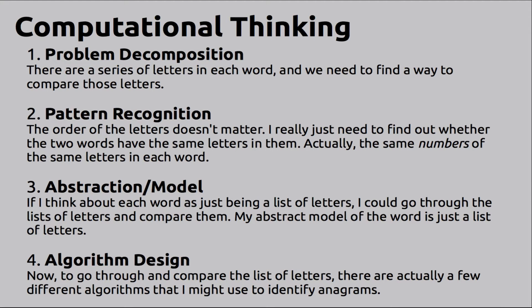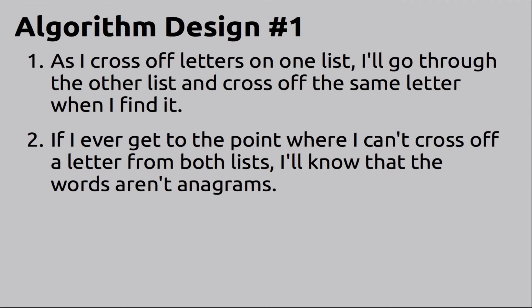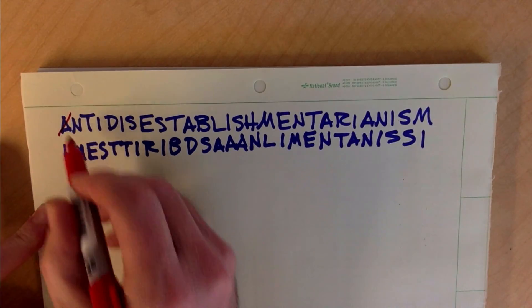If I were doing it by hand, I'd probably choose this first option. As I cross off letters on one list, I'll go through the other list and cross off the same letter when I find it. If I ever get to the point where I can't cross off a letter from both lists, I'll know that the words aren't anagrams.